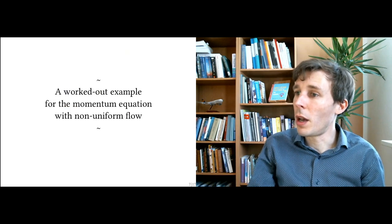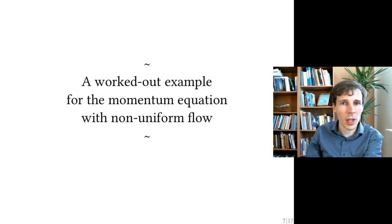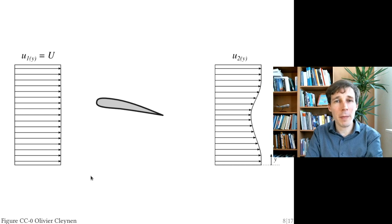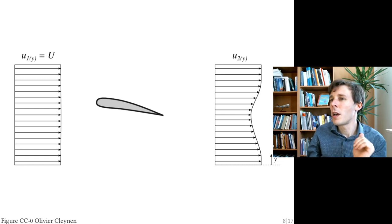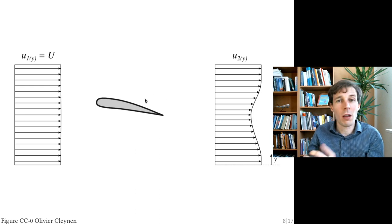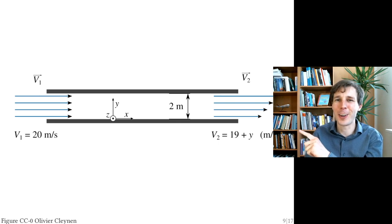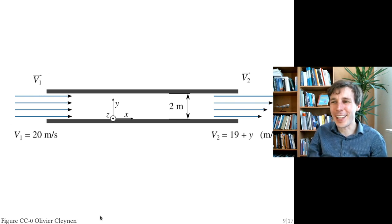Here's a worked-out example for the momentum equation with non-uniform flow. We're looking at a family of problems which consists of measuring the velocity at the inlet and then at the outlet. In this particular problem we're looking at a pipe flow with air coming in from the left going to the right. At the inlet the flow has a uniform distribution of 20 meters per second.